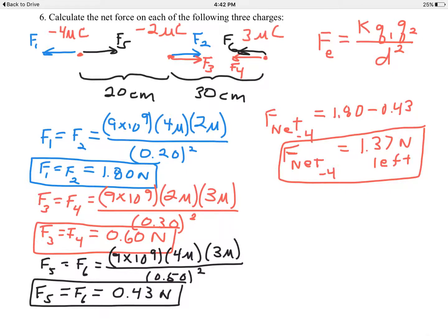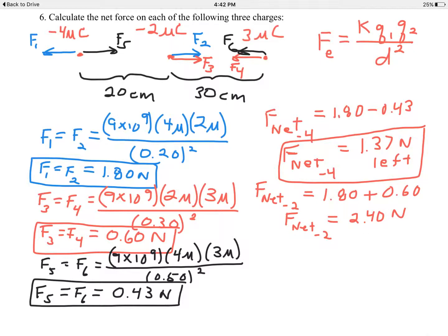Let's go to the middle charge, the negative 2 microcoulombs. F sub 2 and F sub 3 are both acting on it, and both pointing to the right. F sub 2 is 1.80 newtons plus F sub 3 at 0.60 newtons. So the net force on the negative 2 microcoulomb charge is 2.40 newtons to the right, because you're adding 1.80 and 0.60, and they're both pointing to the right.